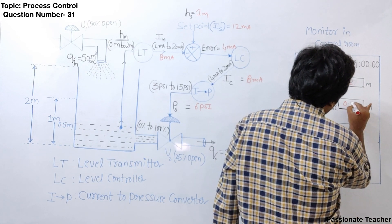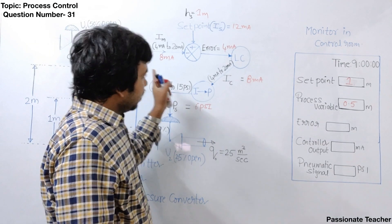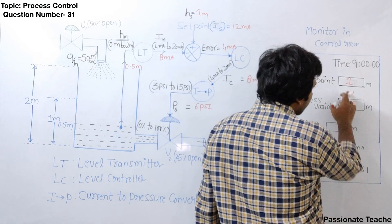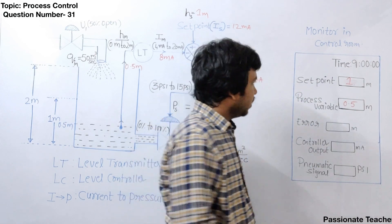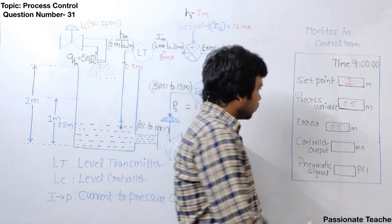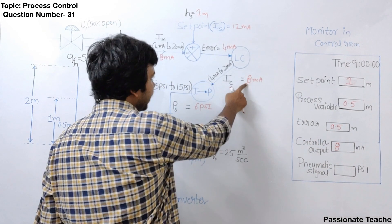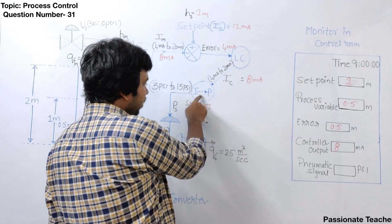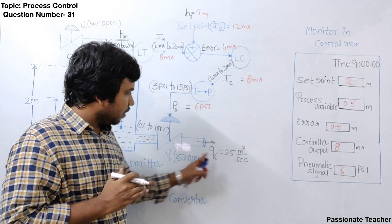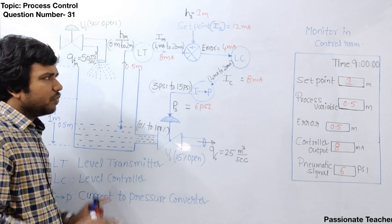At 9 o'clock, the process variable is 0.5 meters. The error in meters is 1 minus 0.5 equals 0.5 meters, which is a 50% error. The controller output is 8 milliampere. The pressure generated by the I2P converter is 6 psi. This 6 psi opens the valve to 25%, giving 25 cubic meters per second output flow rate. Since input flow rate is still greater than output flow rate, if we wait, the water level will slowly increase.